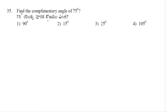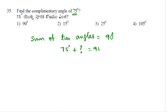Find the complementary angle of 75 degrees. Two angles are said to be complementary if their sum equals 90 degrees. Here we are given 75 degrees. 75° + ? = 90°. If you add 15 degrees to 75 degrees, you get 90 degrees, or subtract 75 from 90 to get 15 degrees. So option 2 is correct.